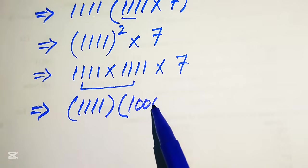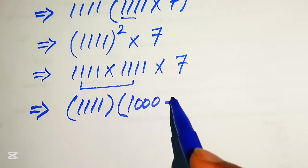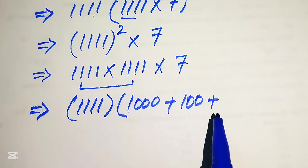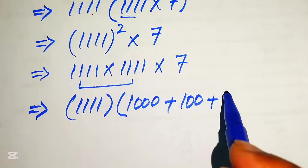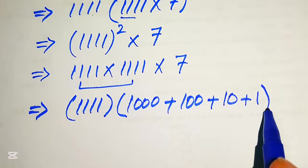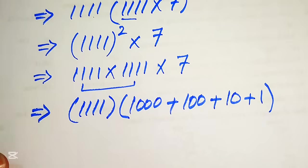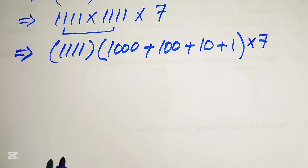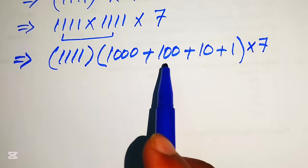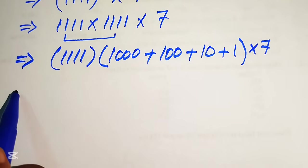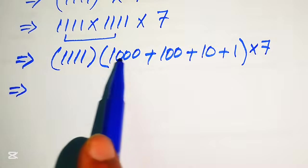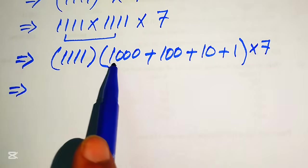We can break this term as 1000 and plus 100 and 10 and plus we have 10 and plus 1, and it is multiplied by 7. Here we need to first multiply this term on each of these values and when you can multiply with each of these values it will be written as here.